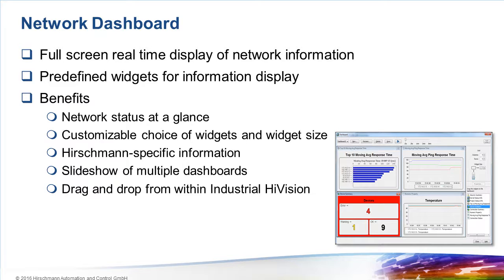We have a device summary widget, which displays how many devices in the network are okay, how many have a warning status, and how many have an error status. Arrows within the widget indicate whether the numbers are increasing or decreasing. Another widget provides the same information but for links. The events widget shows the number of unacknowledged warnings and error events. The security widget shows the number of vulnerable network infrastructure devices.